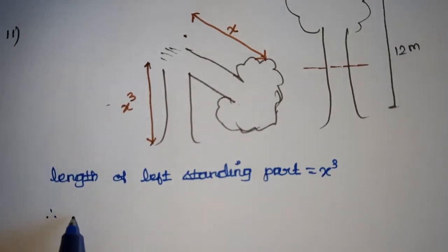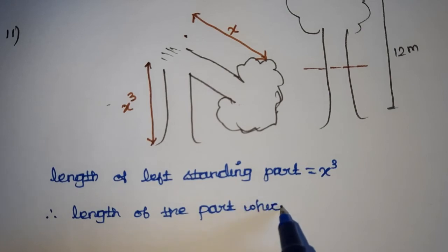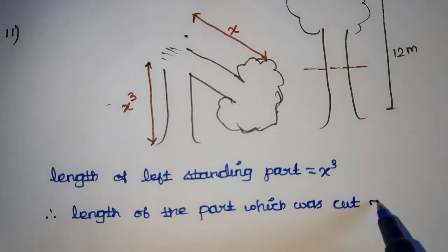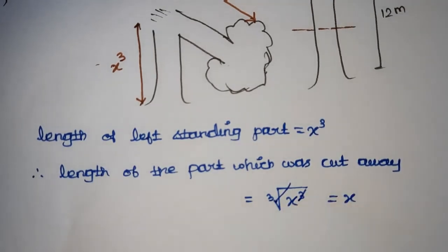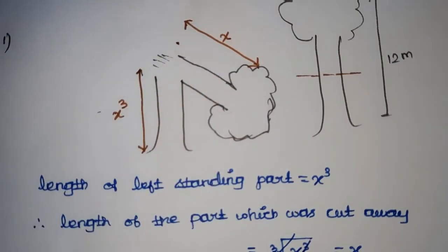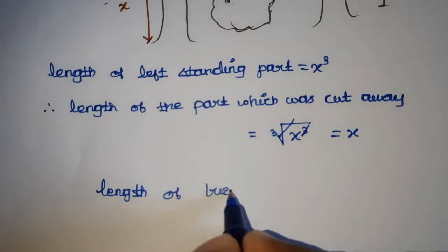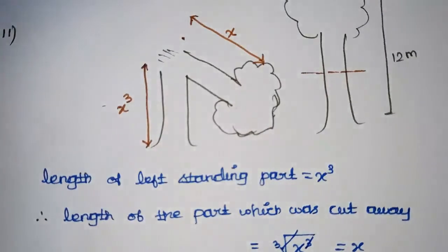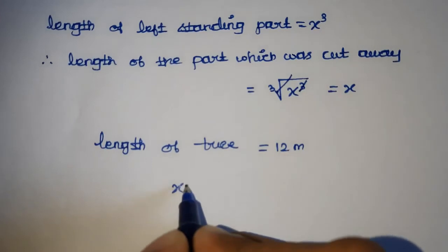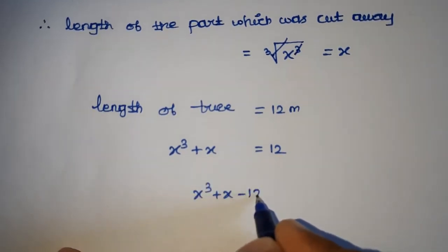Therefore, the length of the part which was cut away is x cubed. Since the total length of the tree is 12 meters, x cubed plus x is equal to 12. Moving 12 to the left-hand side, x cubed plus x minus 12 is equal to 0.